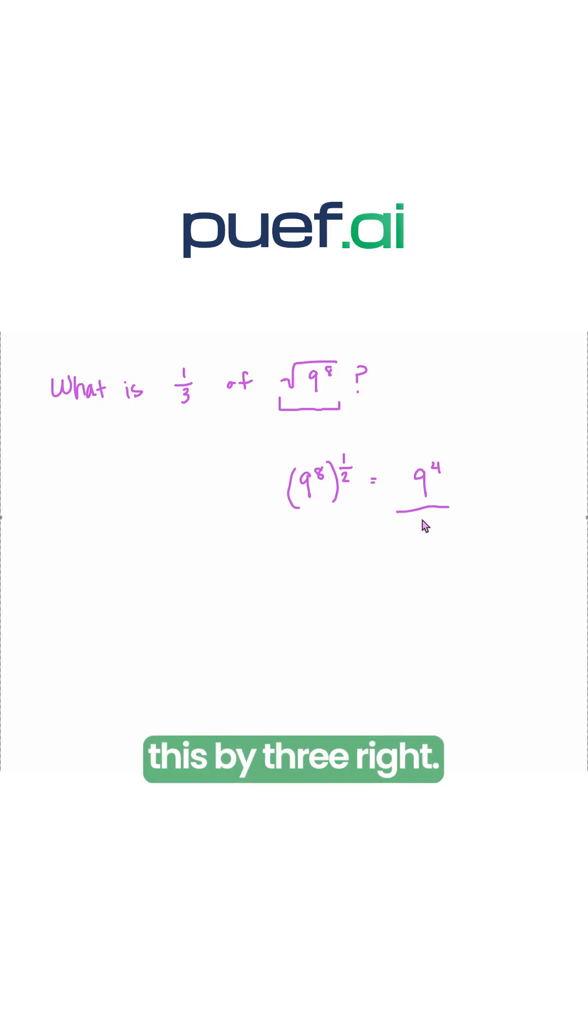But since we want to divide this by 3, right, that's what it means to take 1 third of it. Let's rewrite 9 as a power of 3. So 9 is 3 squared. So this will be 3 squared to the power of 4, and all of this is divided by 3.